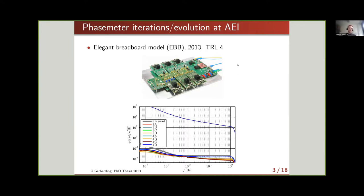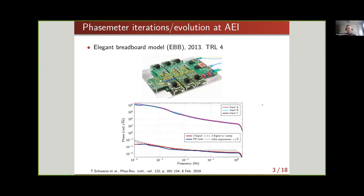In 2013, in a collaboration between AEI, DTU, and Axicon in Denmark, the elegant breadboard model (TRL4) was developed. In a split test, comparing signals at phase meter channels with similar signals, the performance requirements were well met. The gray curve shows the requirements, and the high dynamic range is also demonstrated. A three-signal test was also performed with one phase meter, and the phase meter performed very well — with other noise sources like photo receiver noise limiting the final performance at that time. This was around 2018.